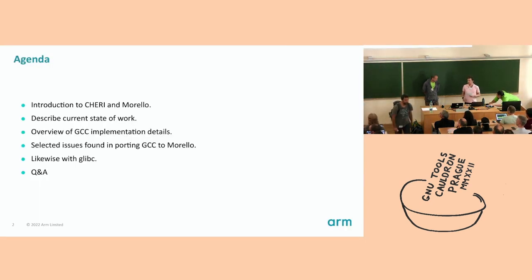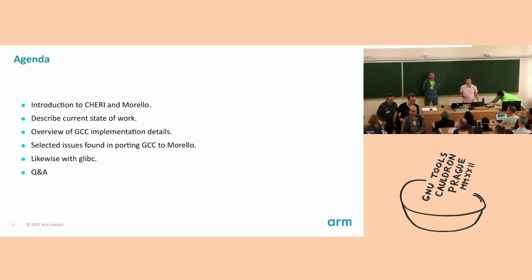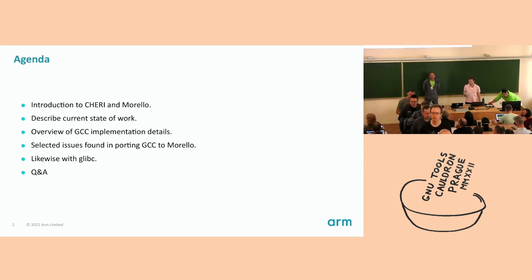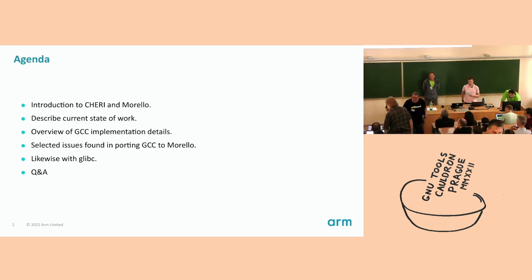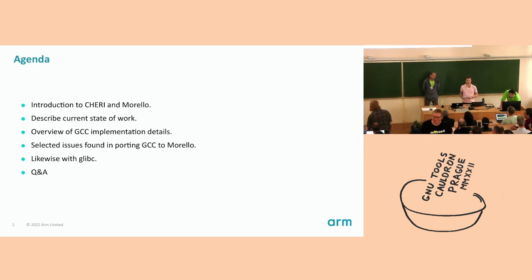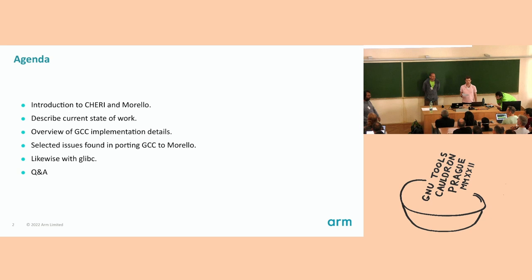We're going to start by giving a brief introduction to CHERI and Morello. Then I'm going to talk about what we've been working on with the toolchain. Then we'll dive into some implementation details in GCC and cover some selected issues found in porting GCC to Morello. Then Subolsh is going to talk about GDB, and finally we'll have Q&A. The idea is to give a feel for the sorts of problems that arise in this area and the work involved in introducing capabilities to the toolchain.